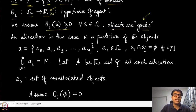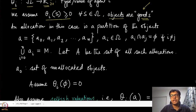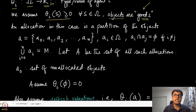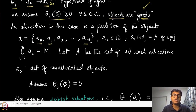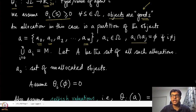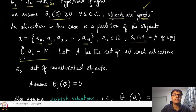In this setup, an allocation in the combinatorial auction is a partition of the m objects into n+1 bins. Each bin from one to n corresponds to which bundle goes to which agent, and the zeroth bin is the set of objects which are unallocated. All the sets A_i and A_j are disjoint, so if an object goes to a specific agent it cannot go to another agent.